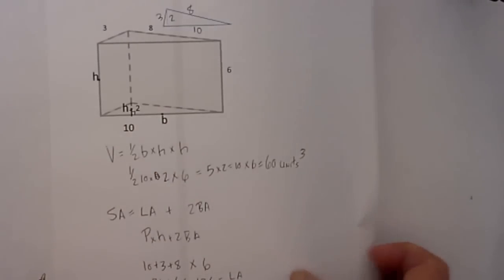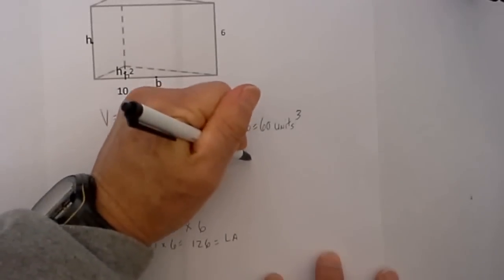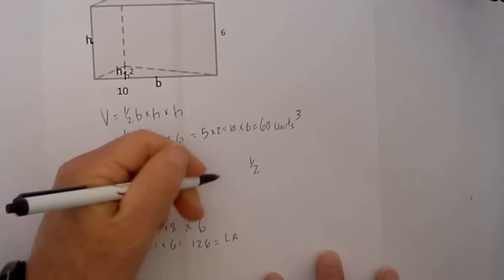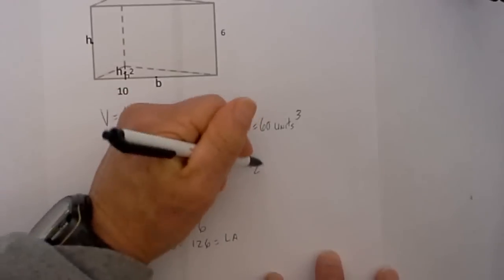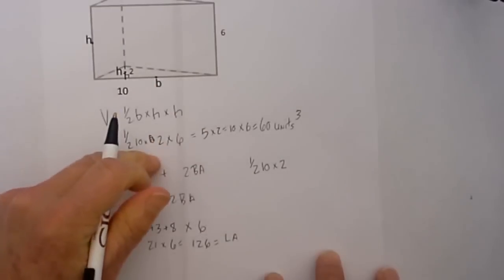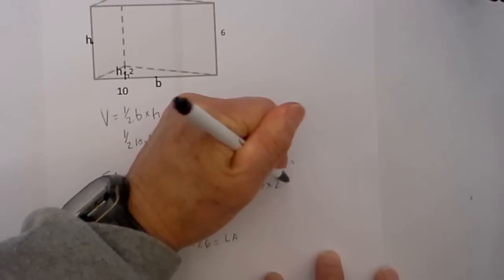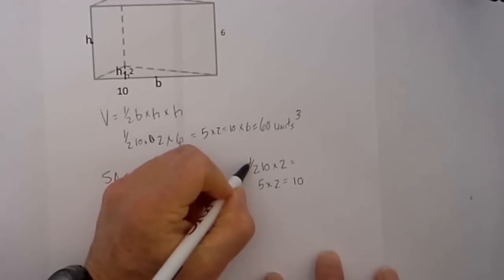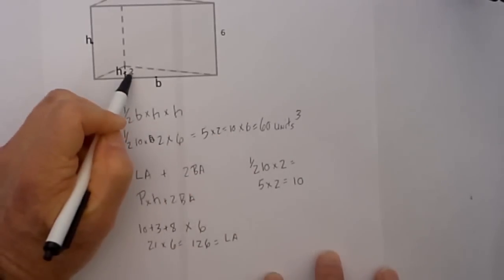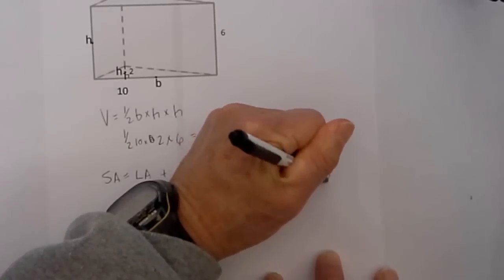Now we need to find two base areas. The formula for the base area is one half the base times the height. The base is 10 and the height is 2, so one half times 10 is 5, times 2 equals 10. That is the area of one base, but notice we have 2 of these, so we multiply by 2, which equals 20.